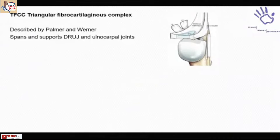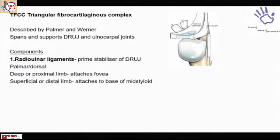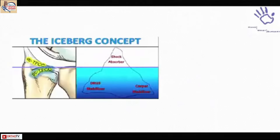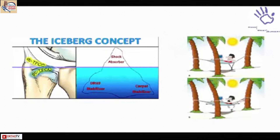The TFCC complex was described by Palmer and Werner. The primary stabilizer of this joint is the radioulnar ligament, which has two components: radiodorsal and radiovolar, each with superficial and deep parts. What we see from the joint proper is only the superficial part, which is just a shock absorber, while the deeper, invisible part from routine wrist arthroscopy is the primary stabilizer. Once the deep foveal attachment is gone, the TFCC starts floating and instability develops.